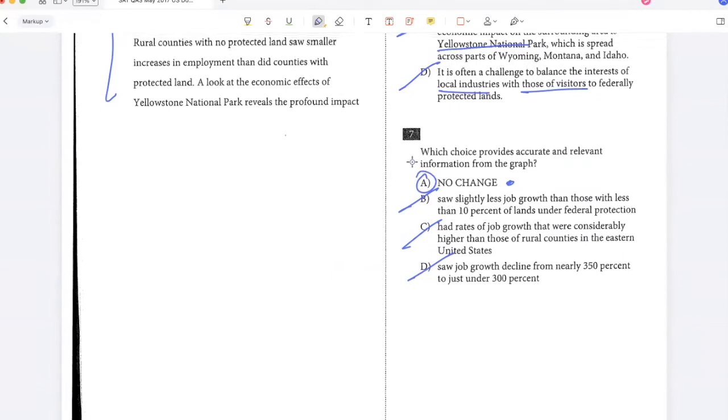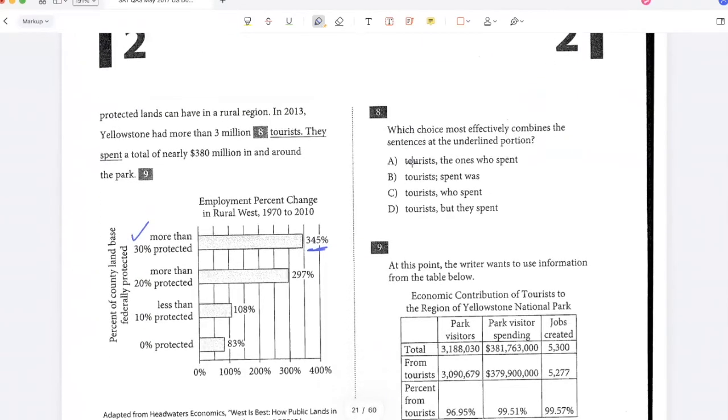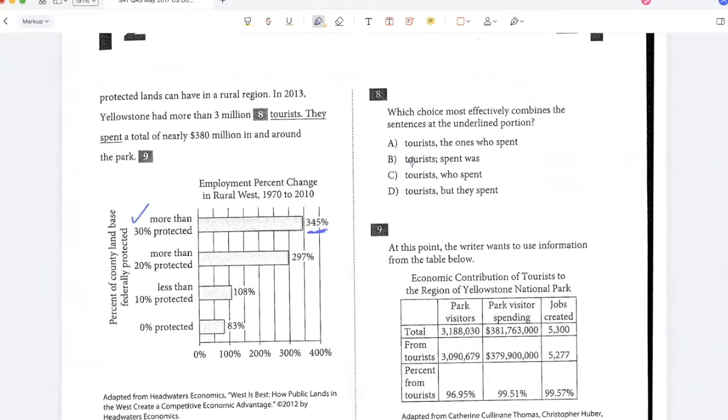A look at the economic effects of Yellowstone National Park reveals the profound impact protected lands can have in a rural region. In 2013, Yellowstone had more than 3 million tourists. They spent a total of nearly $380 million in and around the park. Which choice combines the sentences? Yellowstone had more than 3 million tourists who spent a total of, because I'm just talking about the tourists and they spent a total of, so C is a good option. The ones who spent doesn't make sense because I don't have to say the ones. So A is not right. Spent was is incorrect. This is not an independent sentence, can't come after a semicolon. And but they spent introduces a contradiction into the sentence, which is not required. So the best answer is C.